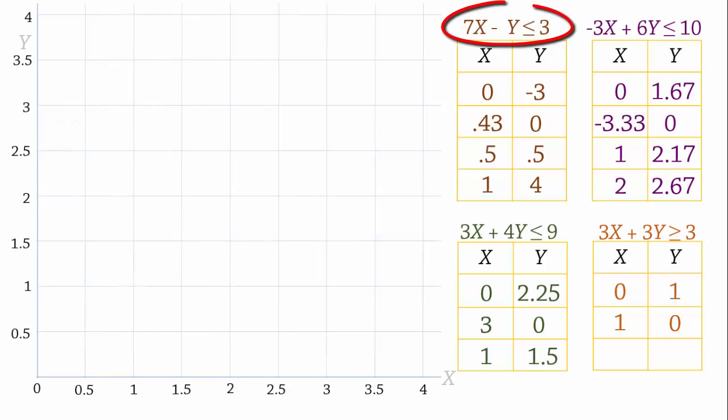In drawing the line for the first constraint, we can just plot the last two points: 0.5, 0.5 and 1, 4. And then the constraint line.